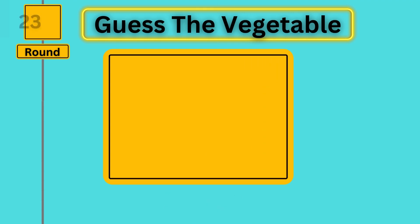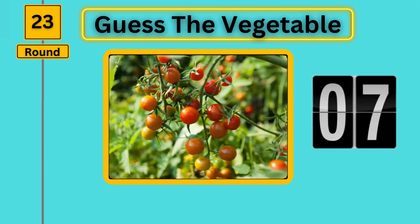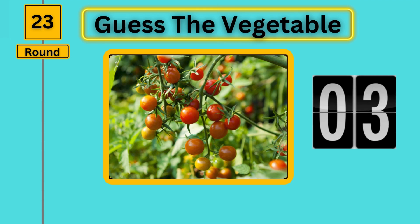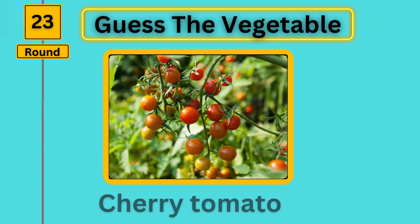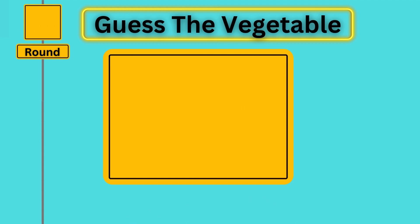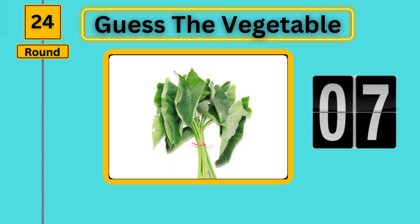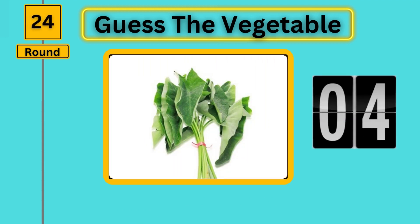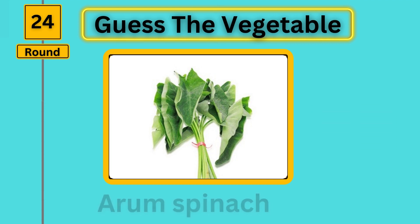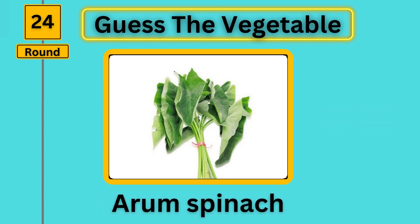Round 23, guess the vegetable. Cherry tomato. Round 24, guess the vegetable. Arum spinach.